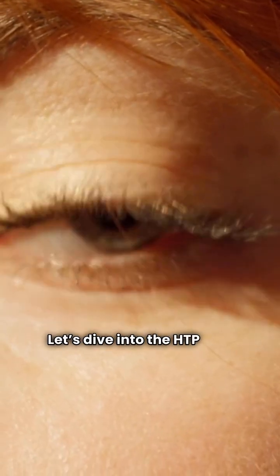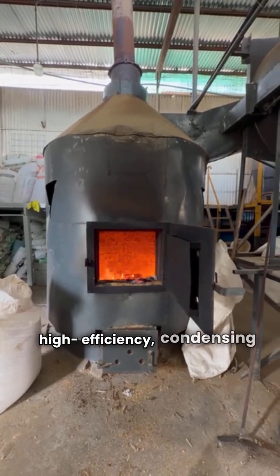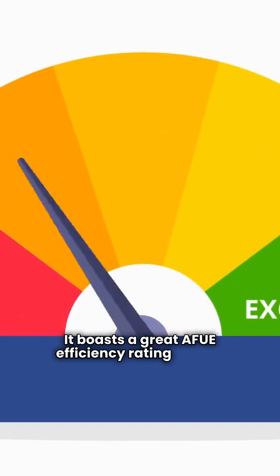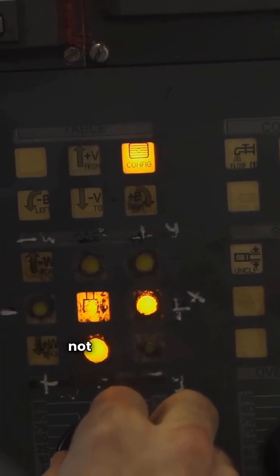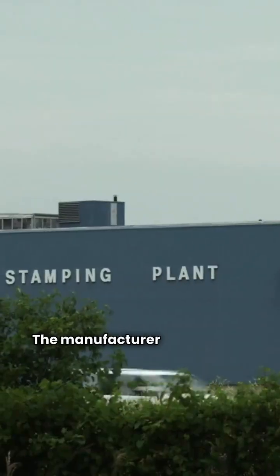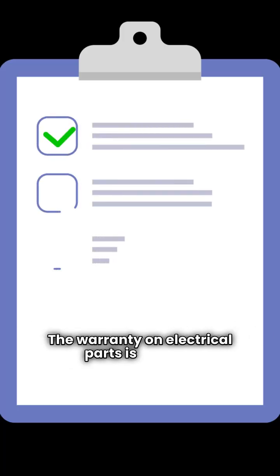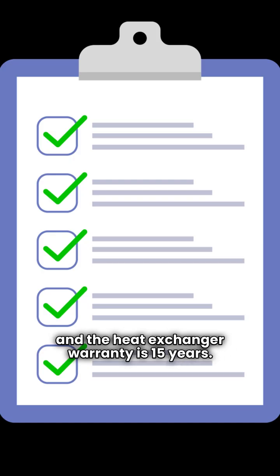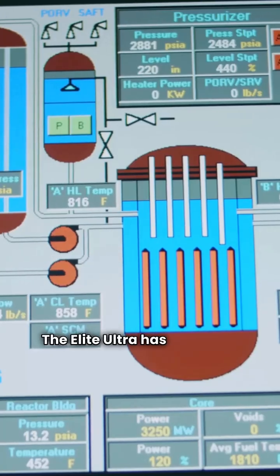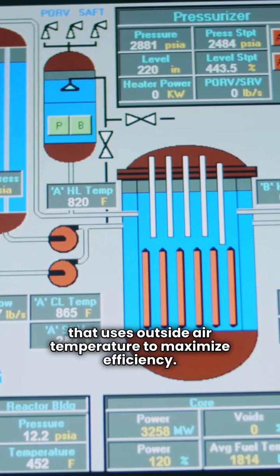Let's dive into the HTP Elite Ultra. This is a wall-mounted, high-efficiency condensing unit. It boasts a great AFUE efficiency rating of 96%. It features modulating control, but not two-stage burn. The manufacturer is located in the USA. The warranty on electrical parts is five years, and the heat exchanger warranty is 15 years. The Elite Ultra has a built-in digital control that uses outside air temperature to maximize efficiency.